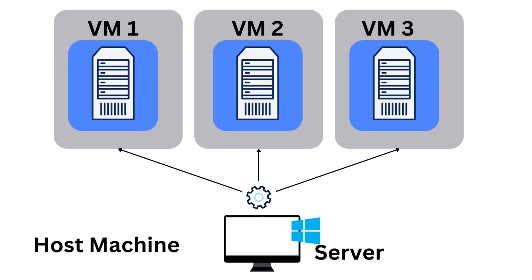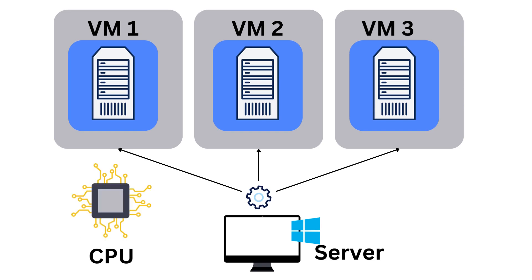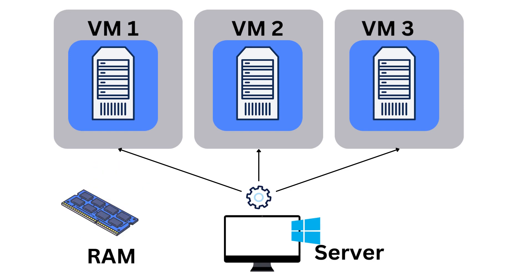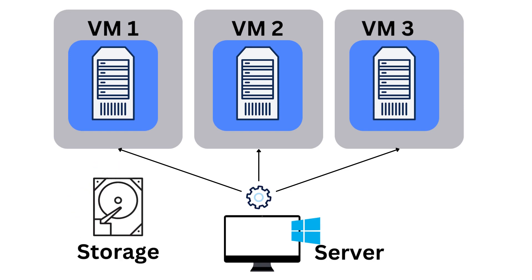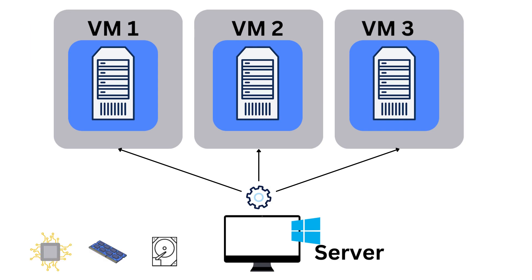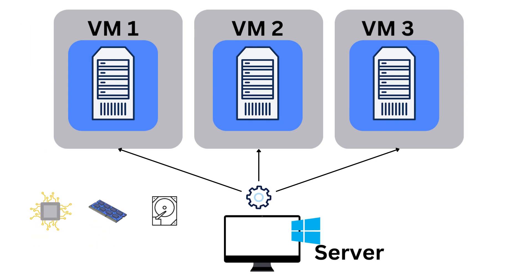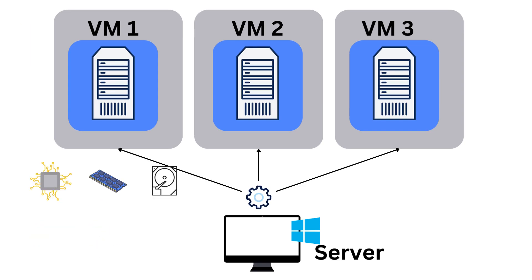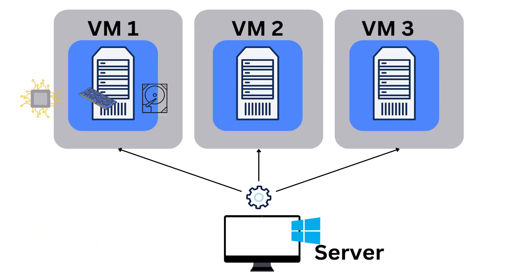Second, Resource Management: The hypervisor allocates the physical resources — CPU, RAM, storage — of the host machine to the virtual machines based on their needs. This allows multiple VMs to share the same physical resources efficiently.